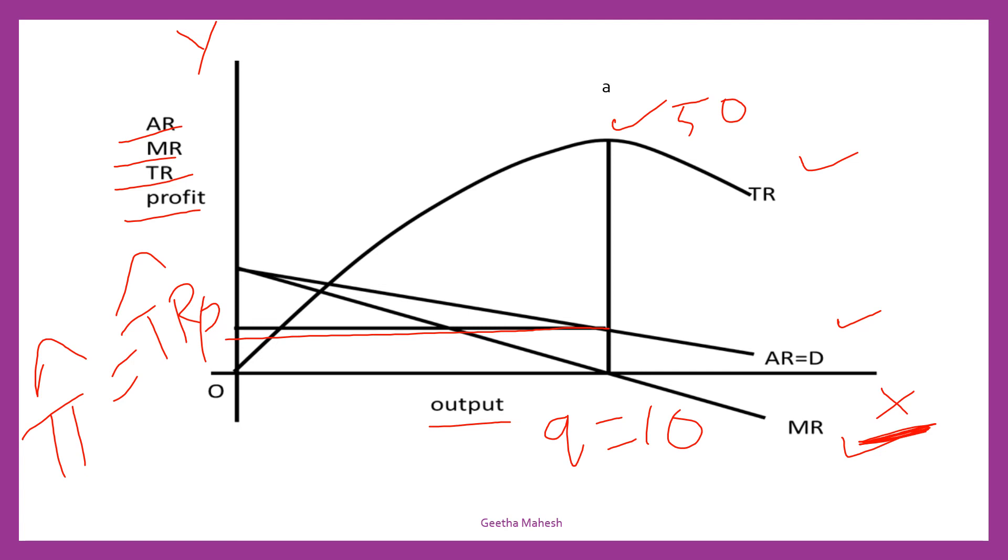A monopoly firm can sell 10 units of output at Rs. 5. So, total revenue is equal to P into Q. What is the price that is going to charge? 5 rupees. And what is the quantity? 10. So, total revenue is equal to 50.